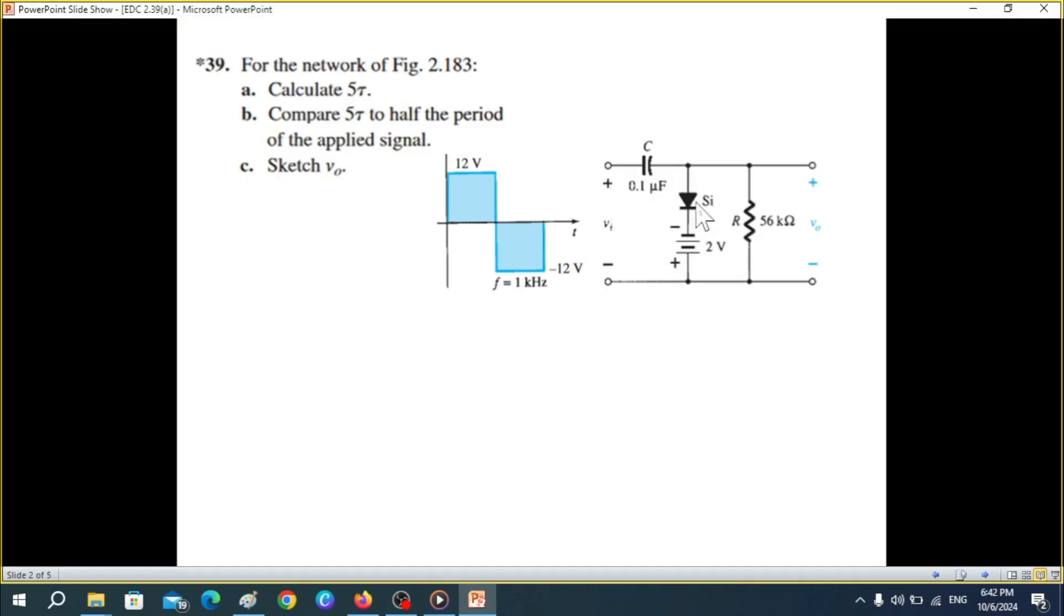The input we have a diode and a battery, resistor, capacitor, and the important thing is that the input is a square wave of one kilohertz. These are the three things we have to find out: calculate 5τ, compare 5τ to half period of the applied signal, and sketch V out.